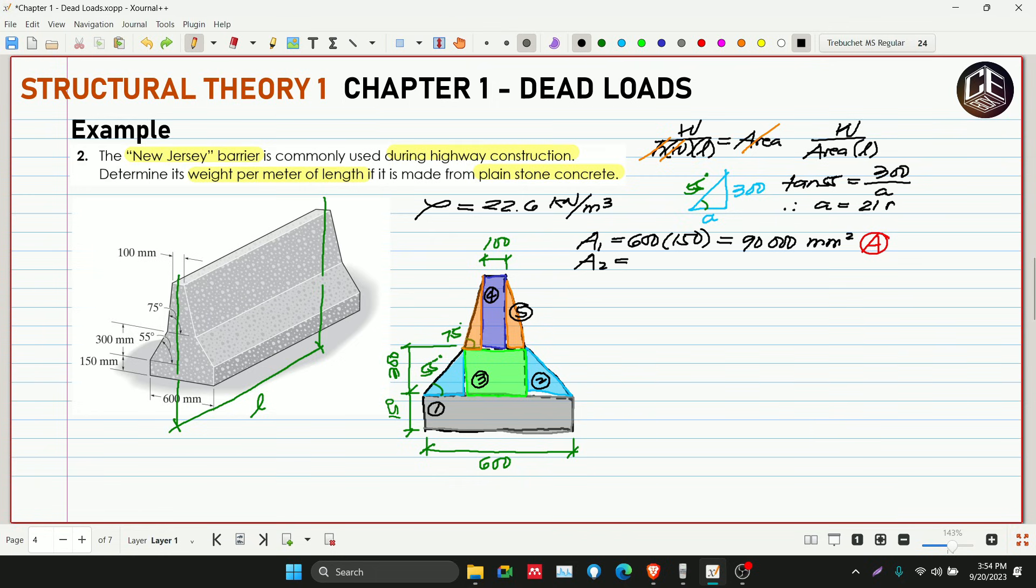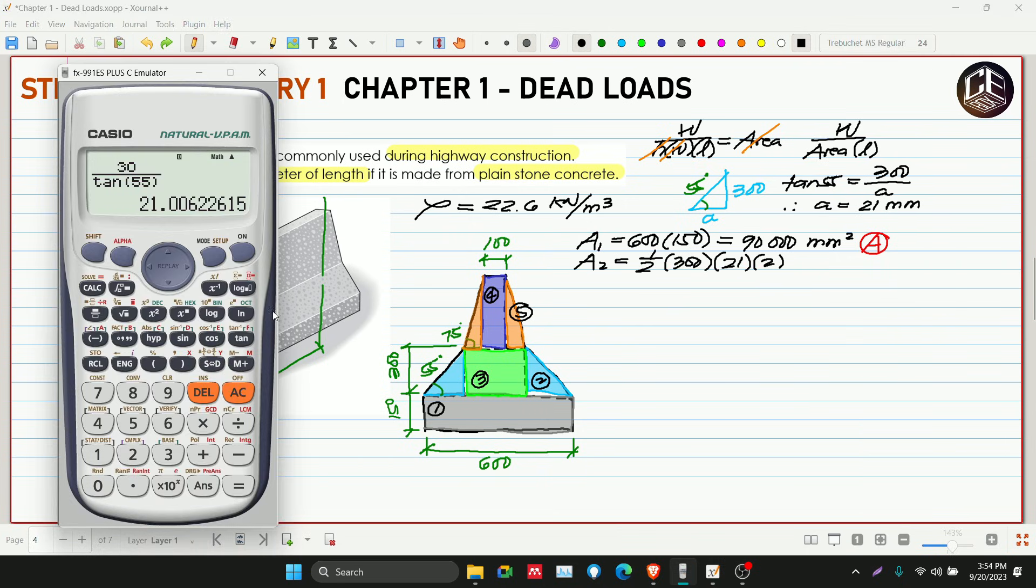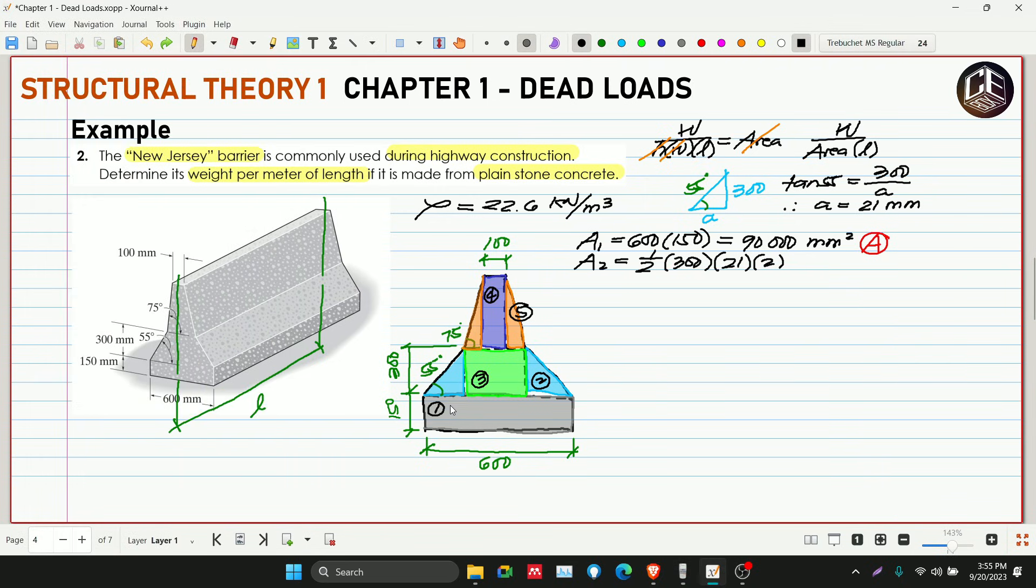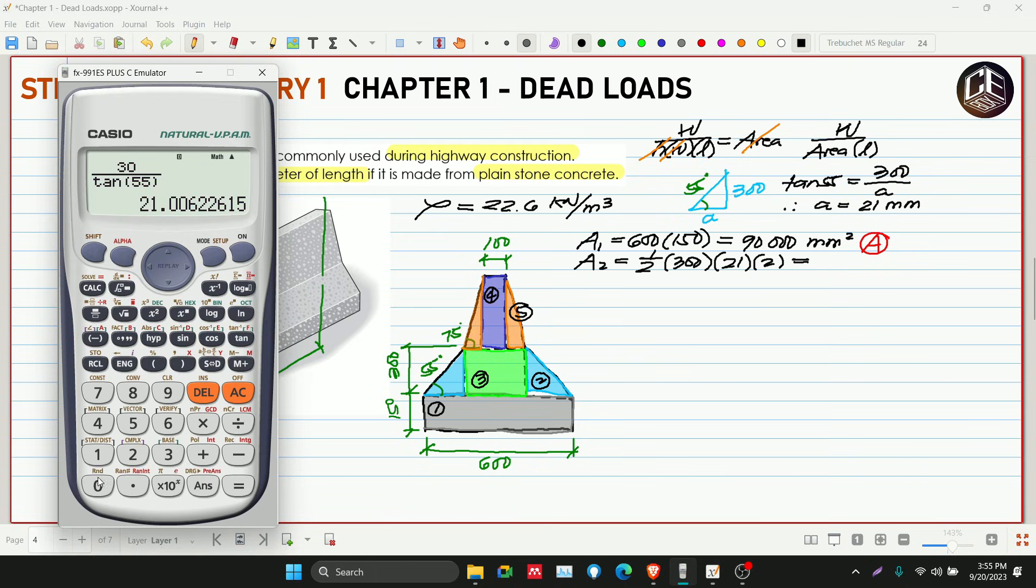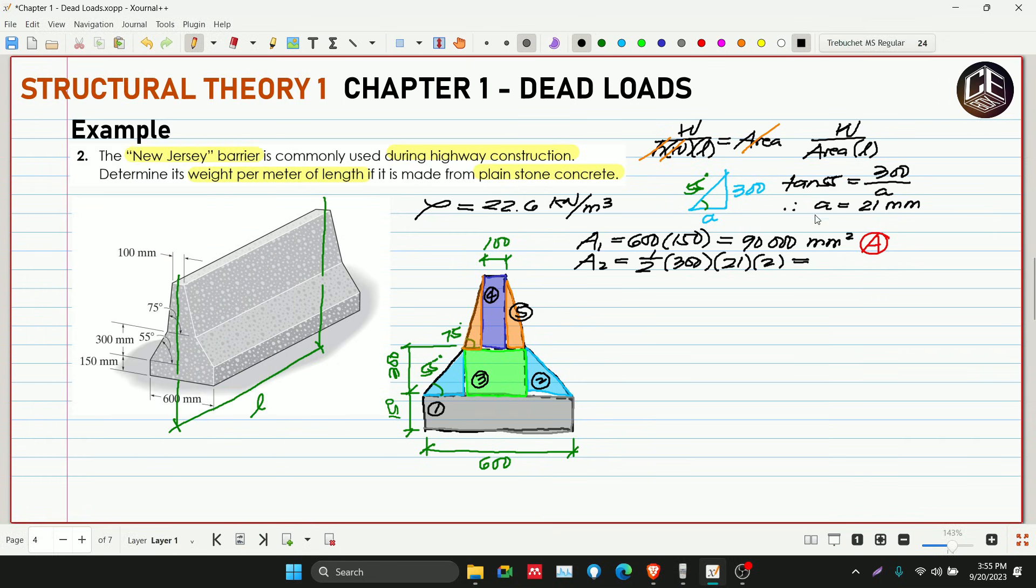So 21.006. So 21 na lang siguro. 21 millimeters. So ngayon, ang ating area is one half of height na 300 multiplied by base na 21 millimeters, then multiplied by 2. Dalwa yan, dalawa sila na triangle. So check natin ulit. 300 divided by tangent 55 degrees. So yun yung ating adjacent. Opposite, adjacent, tangent. Ang one half natin, pwede na nating ilagay sa calculator na 0.5, then multiplied by 300, multiplied by 21, multiplied by 2. So 6,300, then store natin sa B. Millimeter squared. Stored na sya sa alpha B.